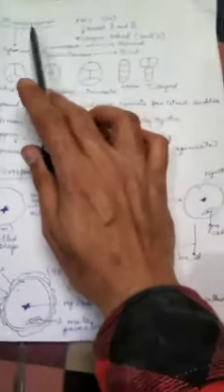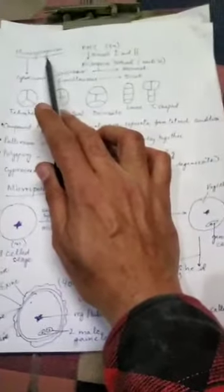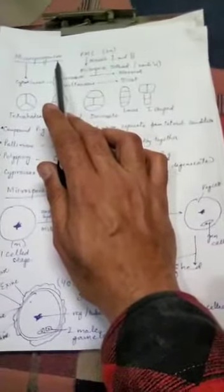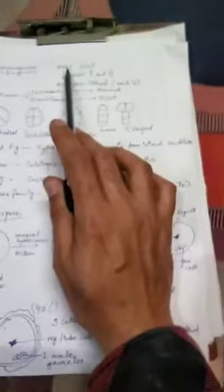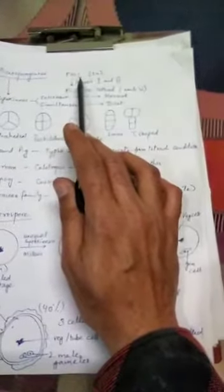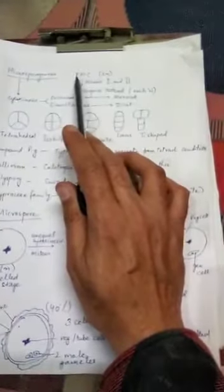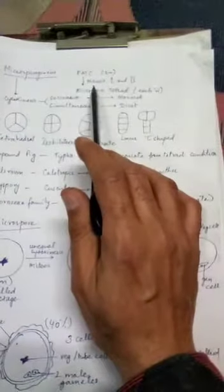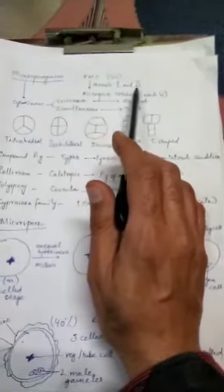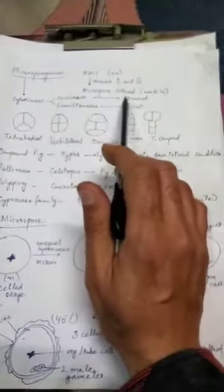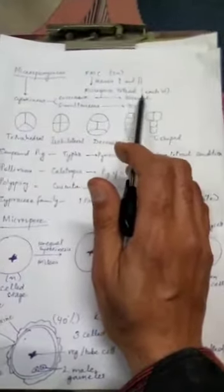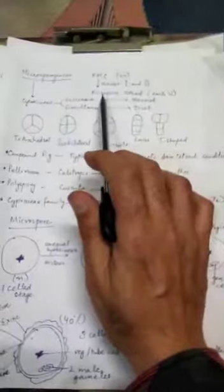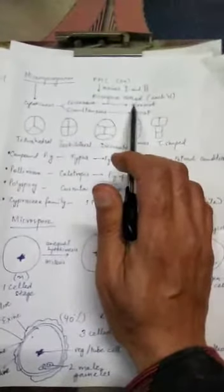Microsporogenesis is the process of formation of microspores inside the microsporangium. It starts with the pollen mother cells, also sometime referred to as microspore mother cells, which are diploid in nature. These cells undergo meiosis first and second to form a group of four cells. Each cell will be haploid and the four cells together are called as microspore tetrad.